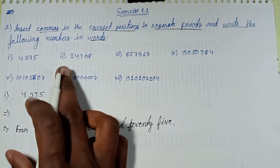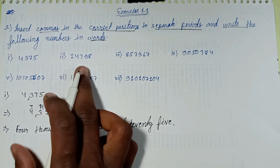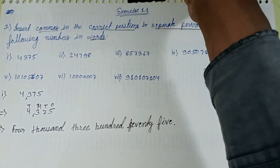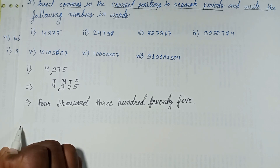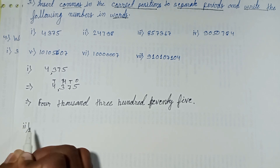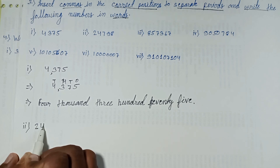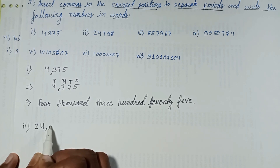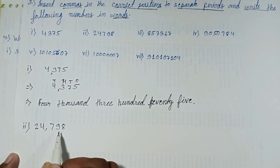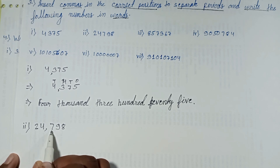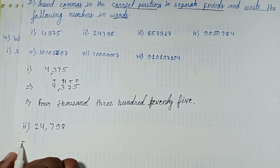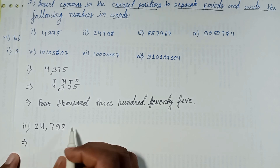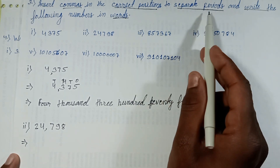Question 2: The number 24,798. Let's solve. Counting from the right side: ones, tens, hundreds — comma — thousands, ten thousands. Separate by period.